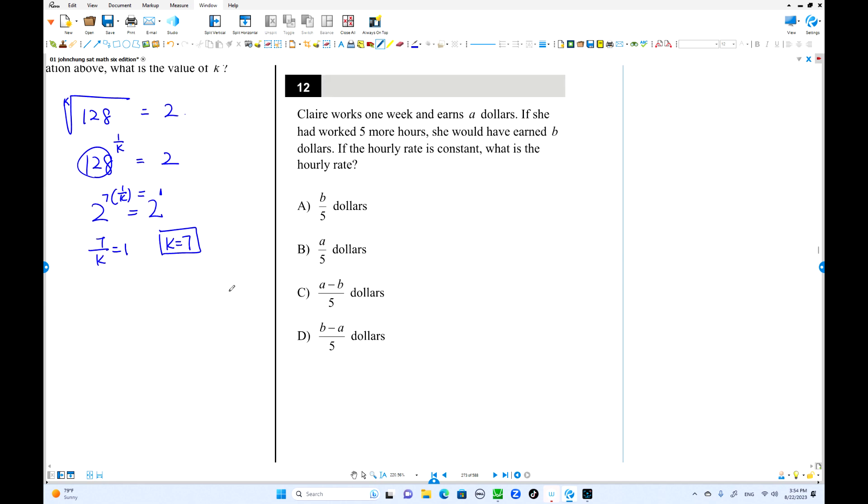Number 12. Claire works one week and makes A dollars. And Sierra works five more hours. This is one week. Eight dollars. Five more hours. If this is five more hours, you would have B dollars. From here to here is B. So what is this side? B minus A. But this is for five hours. Hourly rate, you can divide by 5. That is hourly rate. So B minus A over 5. This is the answer.